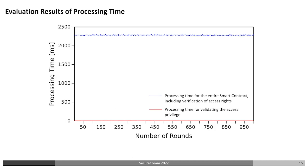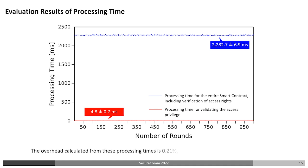The experimental results of the processing time are shown in the following graph. The horizontal axis represents the number of trials up to 1000, and the vertical axis represents the processing time. The blue line shows the processing time for the entire smart contract including validation of the access privilege, and the red line shows the processing time for only validating the access privilege. In both cases, the processing times remained stable at 2282.7 ms and about 4.8 ms respectively. The overhead calculated from these processing times is 0.21%, indicating that the overhead is very small.